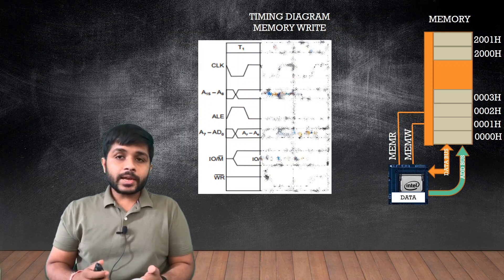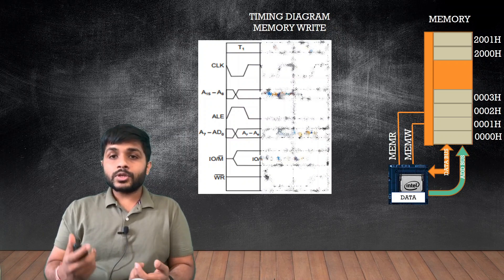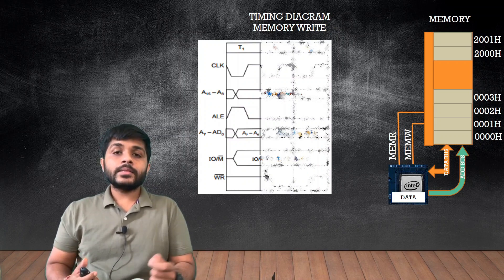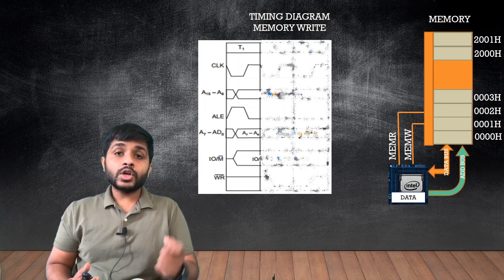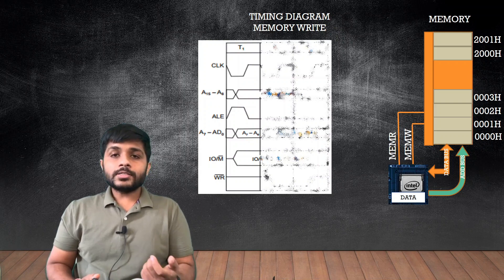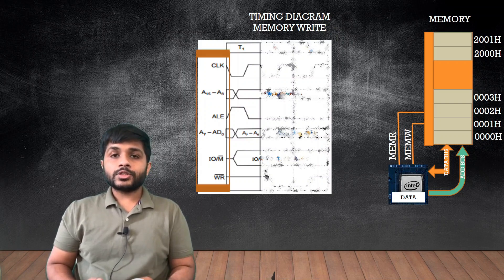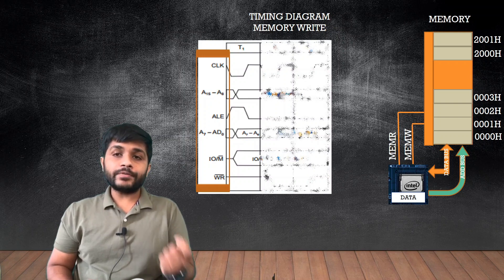What is a timing diagram? Using the timing diagram we can see different signals, which help us understand what steps are done by the microprocessor to perform one machine cycle. Let's look at all the signals. There is a clock, and then there is the higher-order address bus A8 to A15, which is a dedicated address bus.